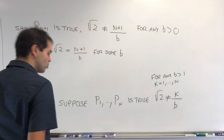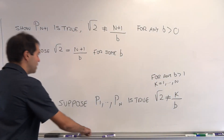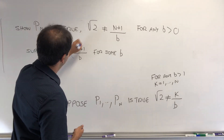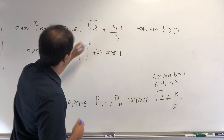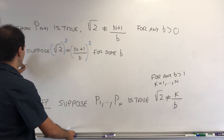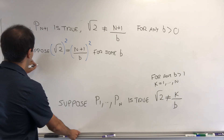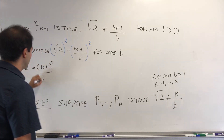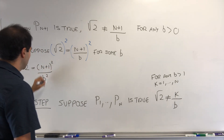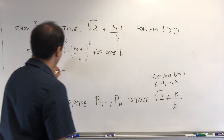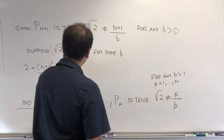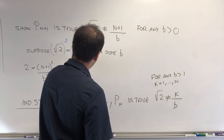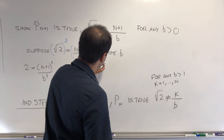Then just do the usual: square both sides, and what we get is two equals (n+1)² over b². So (n+1)² equals 2b².